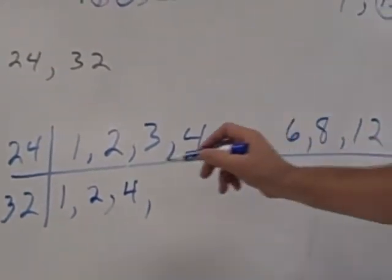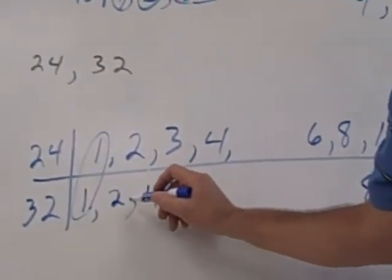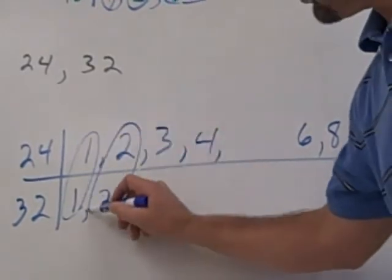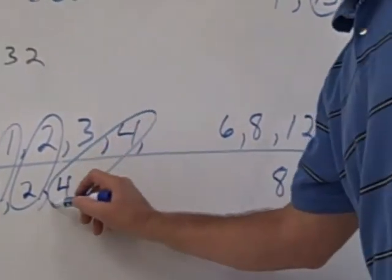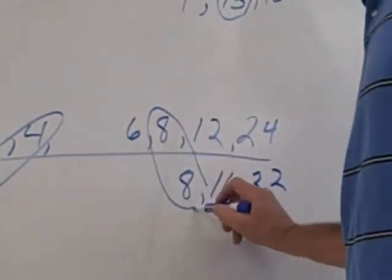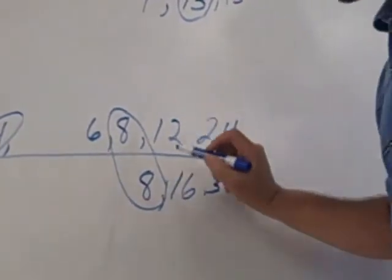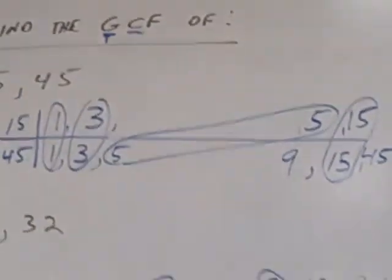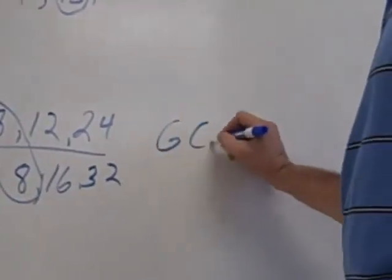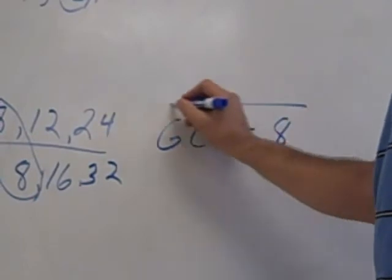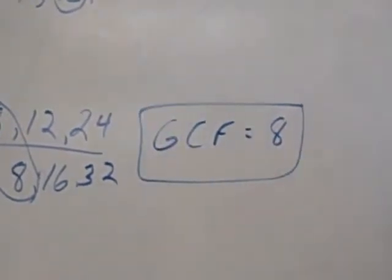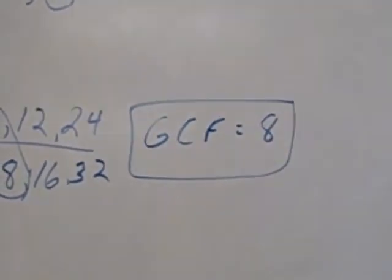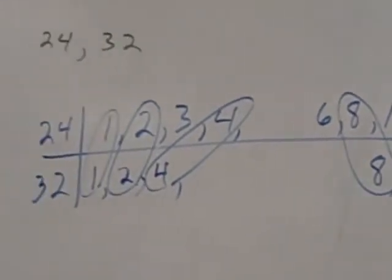Now circle what's common. The ones, twos, fours, eights. That's it. Now which one's the greatest circle? Eight. So GCF equals eight. Everybody okay? Did I go too fast? No.